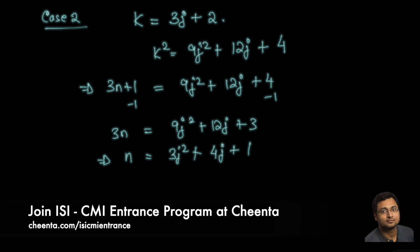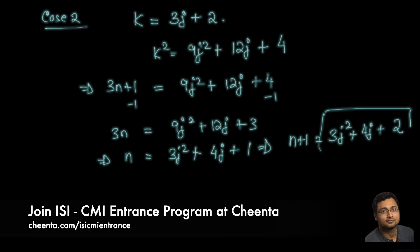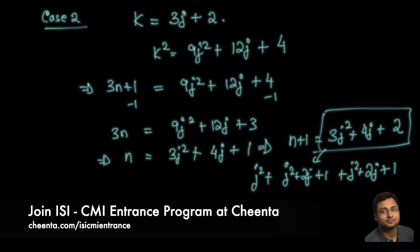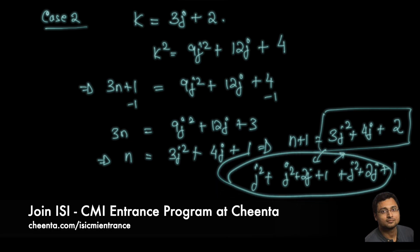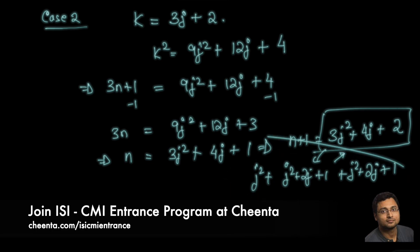Again we are interested in n + 1, so n + 1 = 3j² + 4j + 2. This can be written as j² + (j² + 2j + 1) + (j² + 2j + 1). You can check this is exactly the given expression. This expression is the sum of three square numbers — tell me why in the comments. Think about it, and I'll see you in the next video with more beautiful problems!